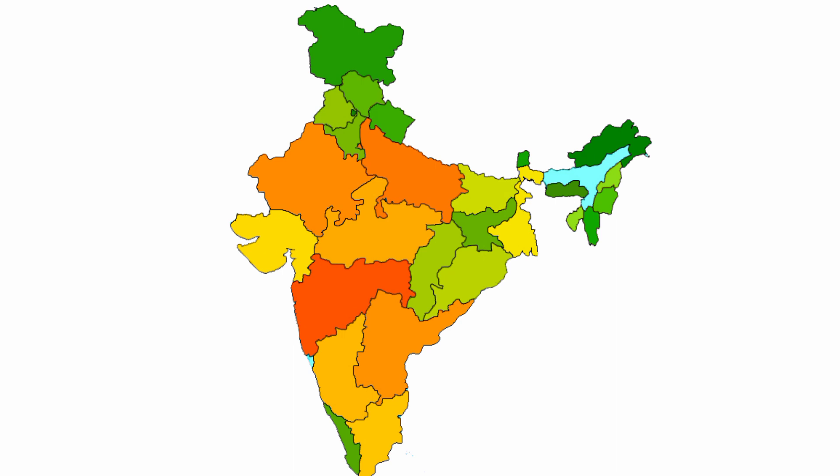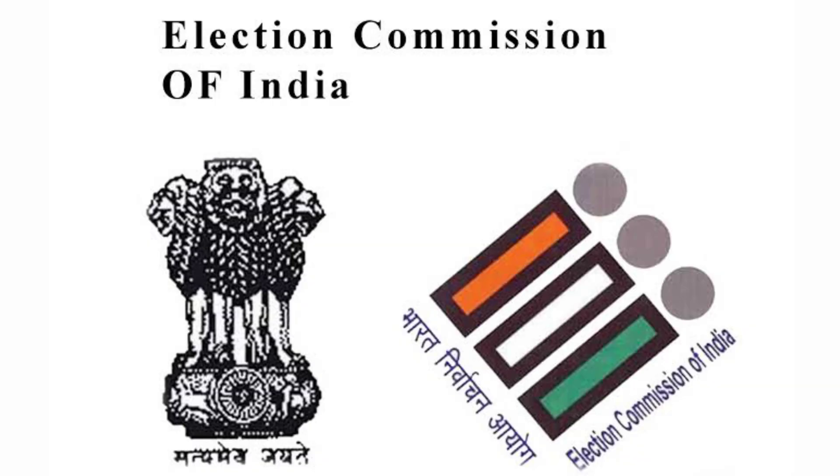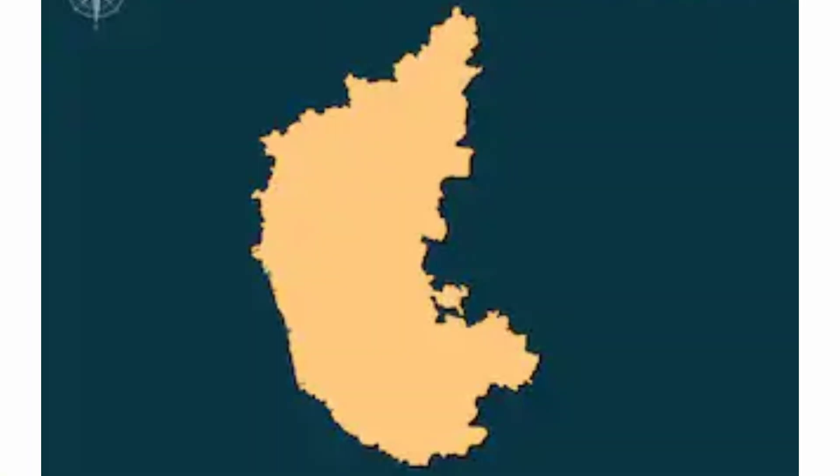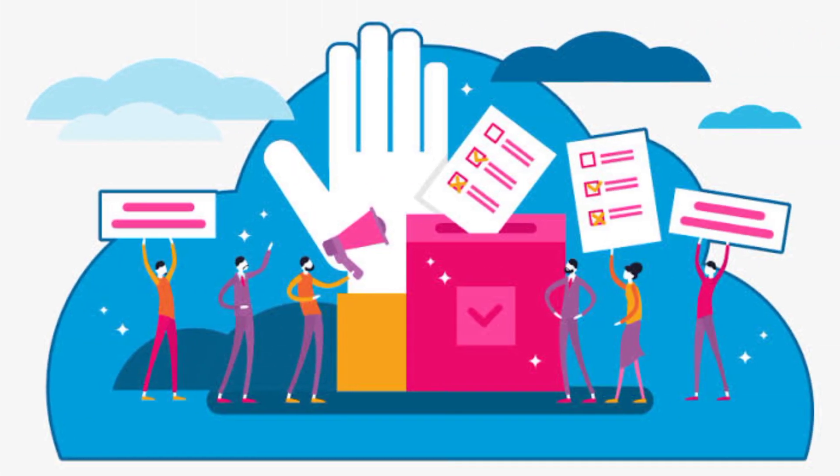The Governor appoints the State Election Commissioners under Article 243K and Z-A. In Karnataka, the Election Commission has been formed under Article 308 of the Karnataka Grama Swaraj and Panchayat Raj Act 1993, and it conducts elections of local bodies.